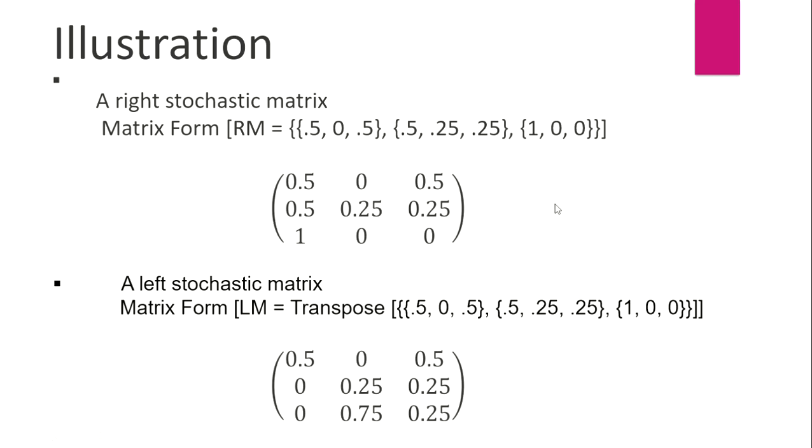This is the left stochastic matrix. This is the matrix form as the transpose of the right stochastic matrix, and by adding the columns we shall get equals to 1.